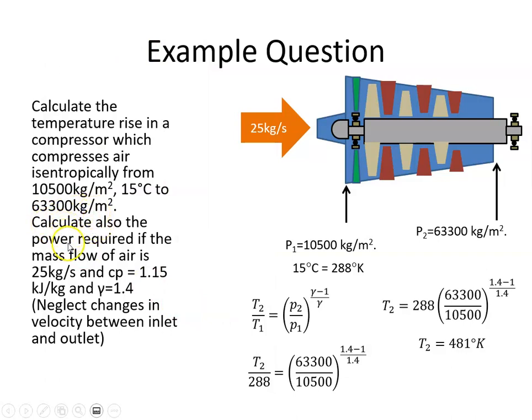We're also asked to calculate the power required if the mass flow of air is 25 kilograms per second, and we're given the constants here.